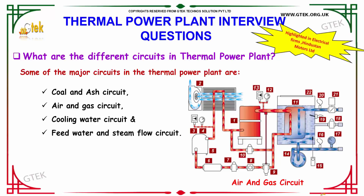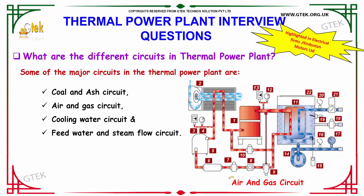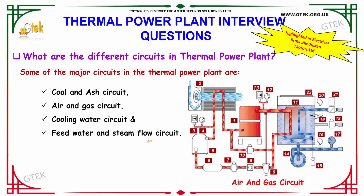What are the different circuits in a thermal power plant? The major circuits available in a thermal power plant are: coal and ash circuit, air and gas circuit, cooling water circuit, and feed water and steam flow circuit.